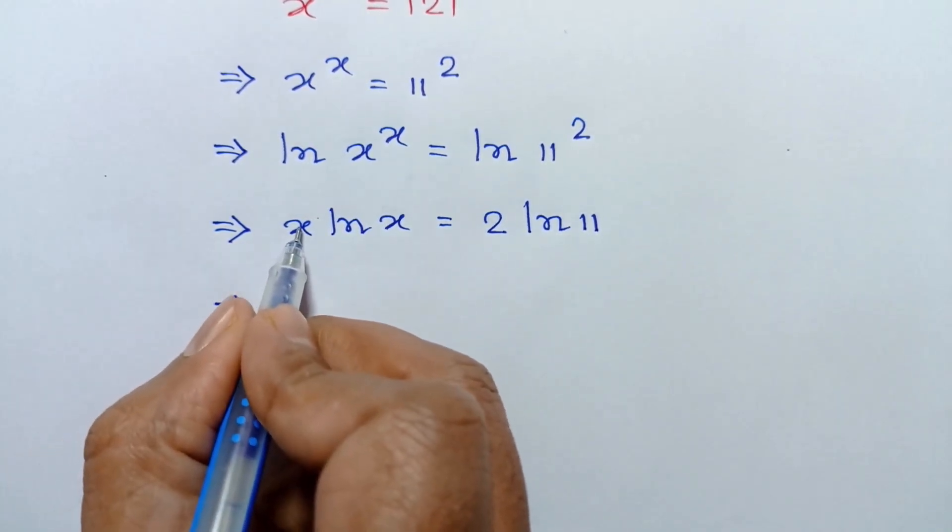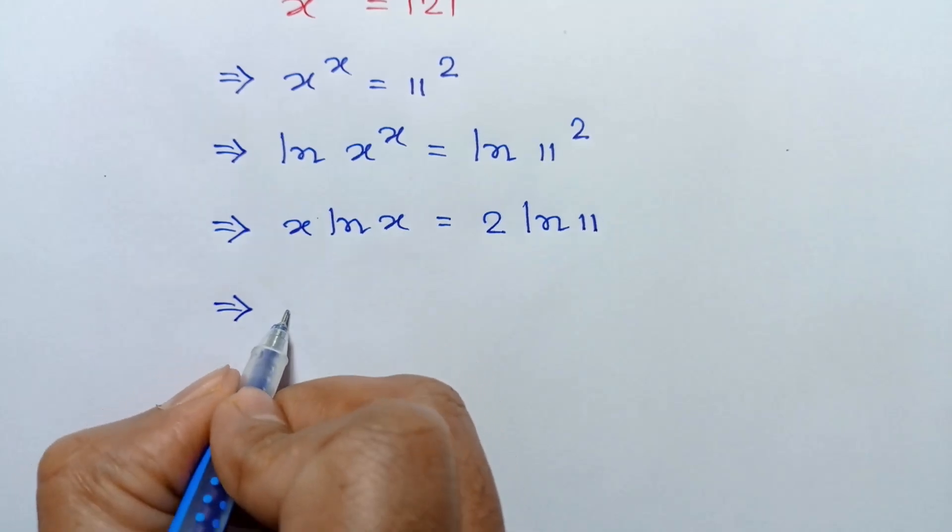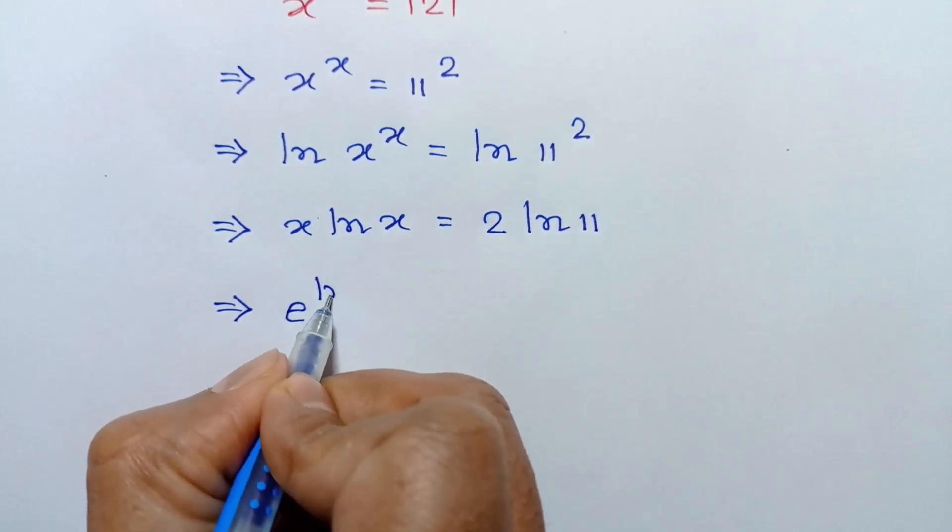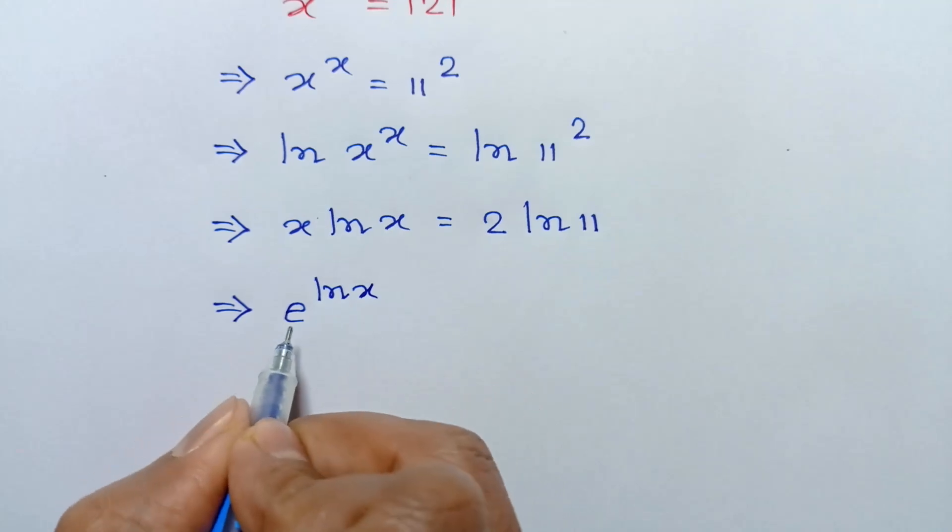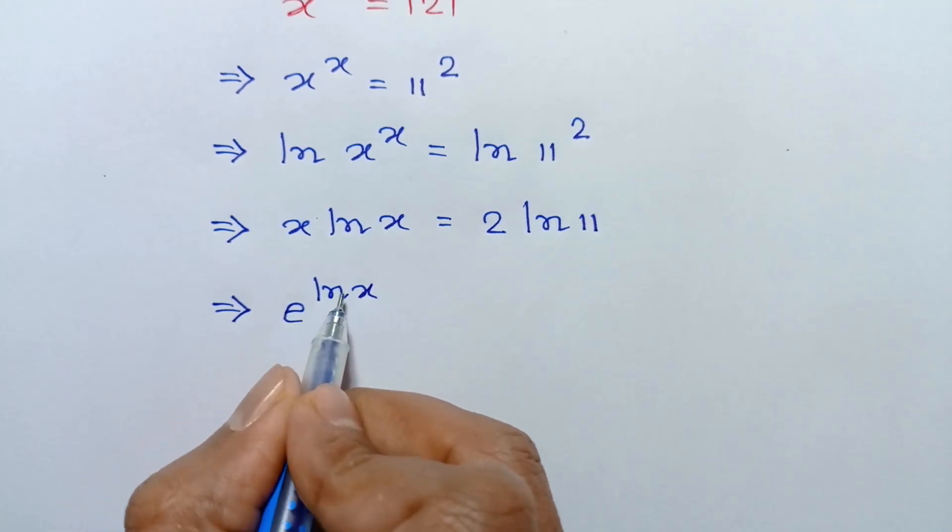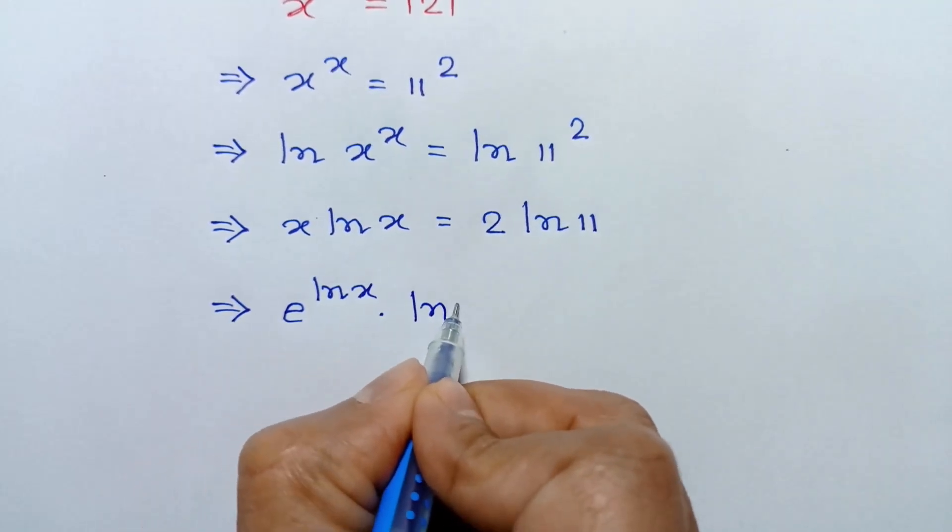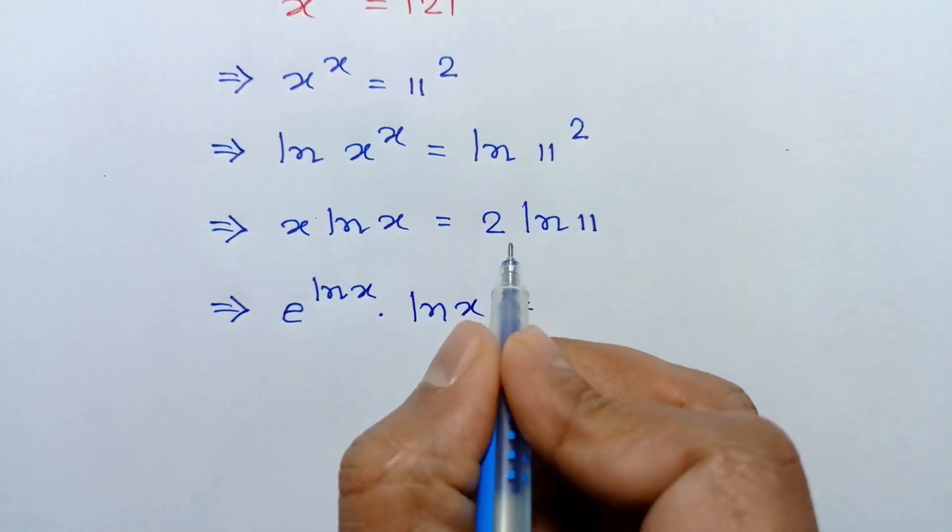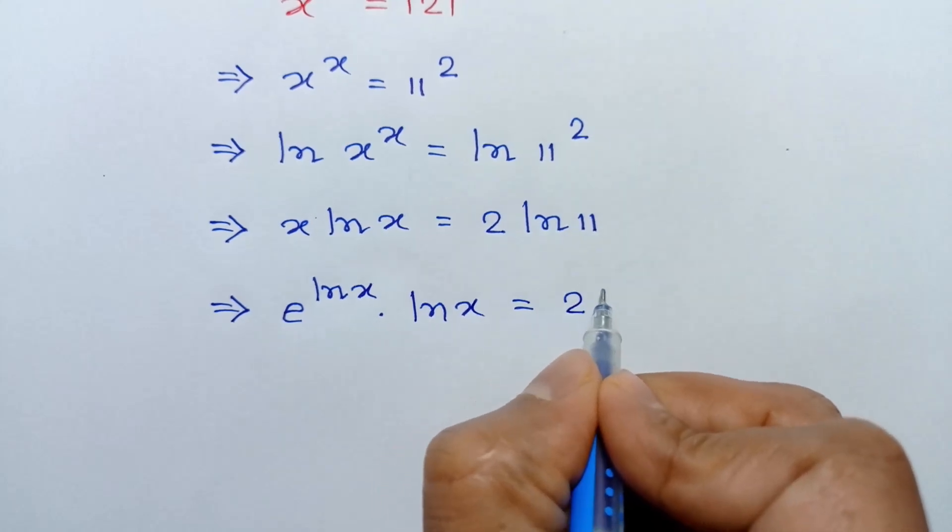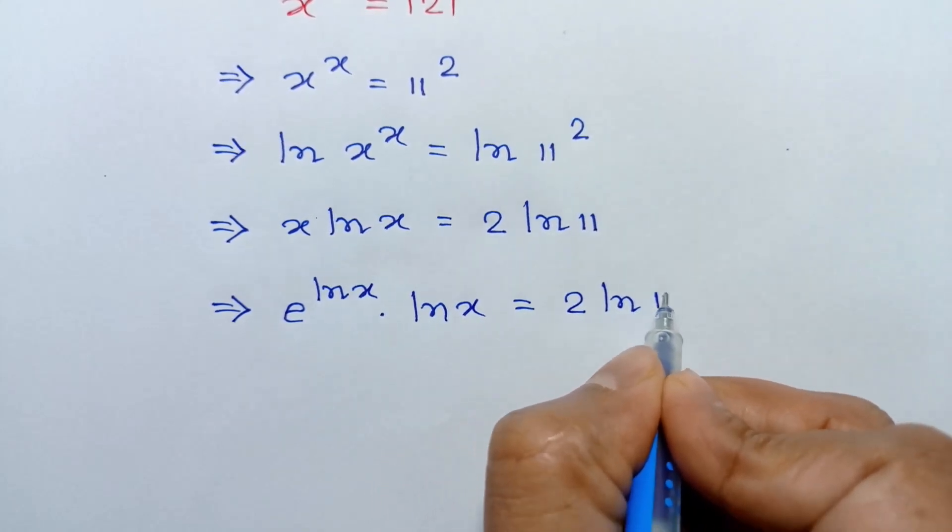This x can be written as e to the power ln x. So e to the power ln x times ln x equals 2 ln 11.